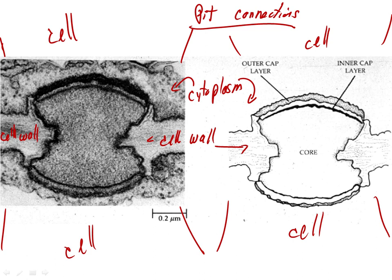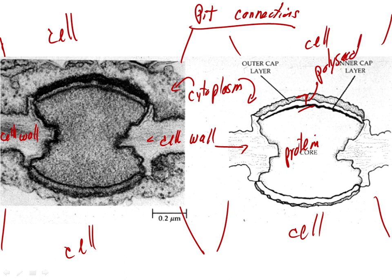Plasmodesmata give cytoplasmic continuity in higher plants but don't occur in animals. These pit connections are also holes in the cell wall, but they're big — nuclei could actually move through them when open. The center of these pit connections is protein, and the outer layer is polysaccharide. So they block the holes in the cell.